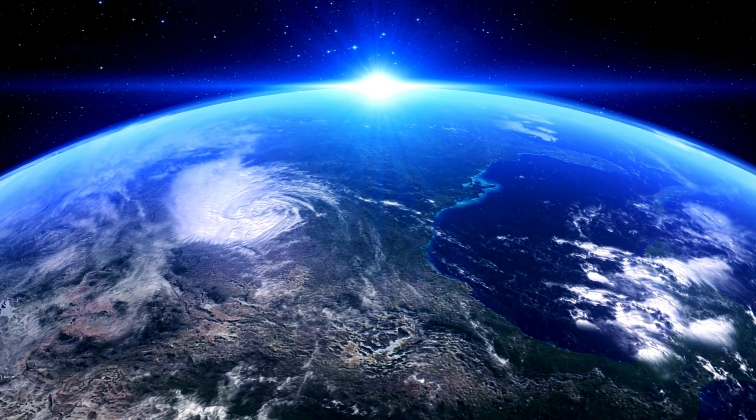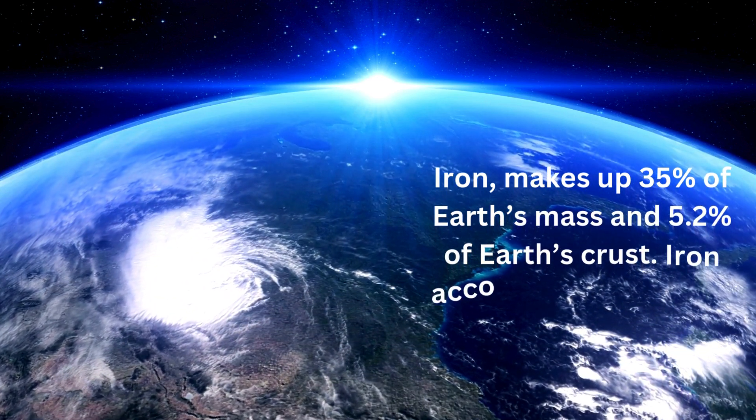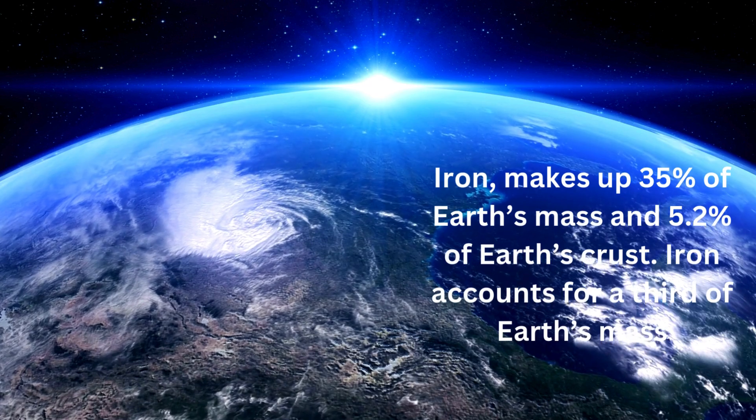First, let's talk about iron. Iron makes up 35% of Earth's mass and 5.2% of Earth's crust. Iron accounts for a third of Earth's mass. Most of it exists not in the crust, but within the core.